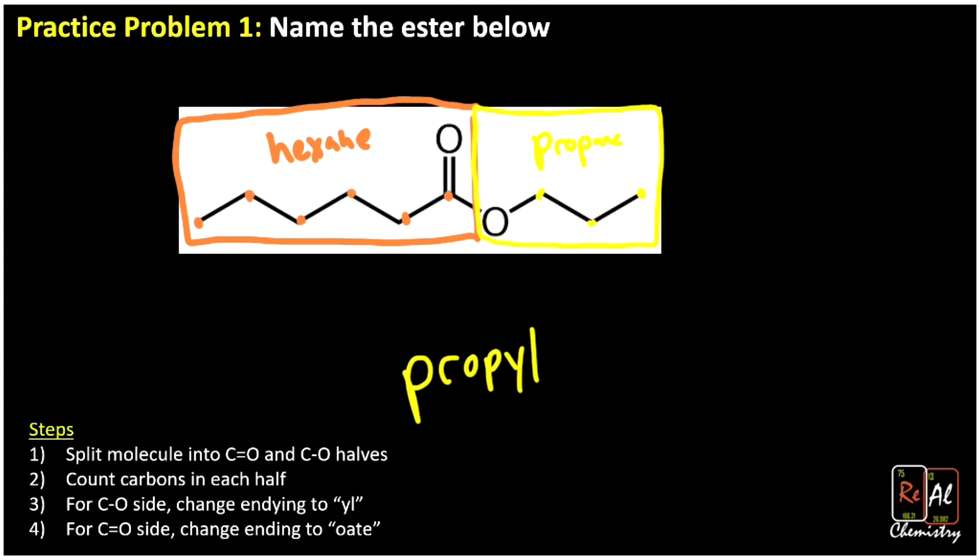And then the one with the C=O double bond forms our base name, which is hexane. We drop the E, and we make it hexanoate. So that's propyl hexanoate. Now I'm going to play a trick on you.